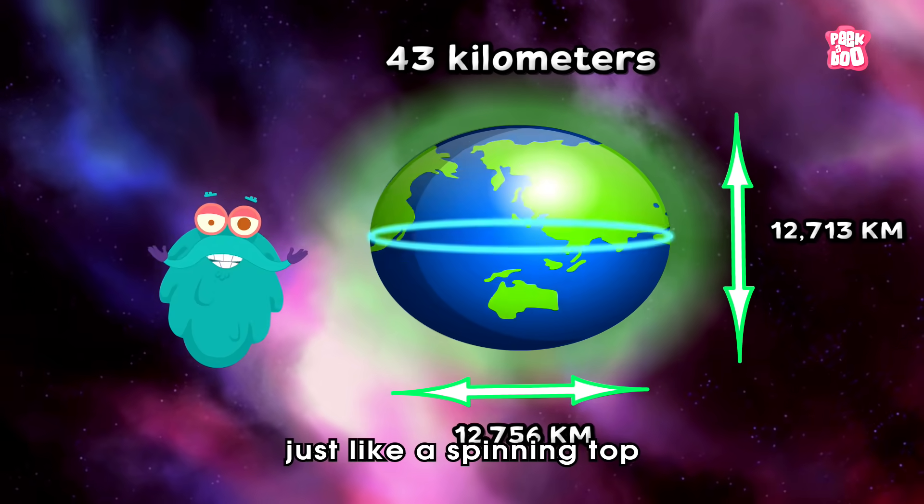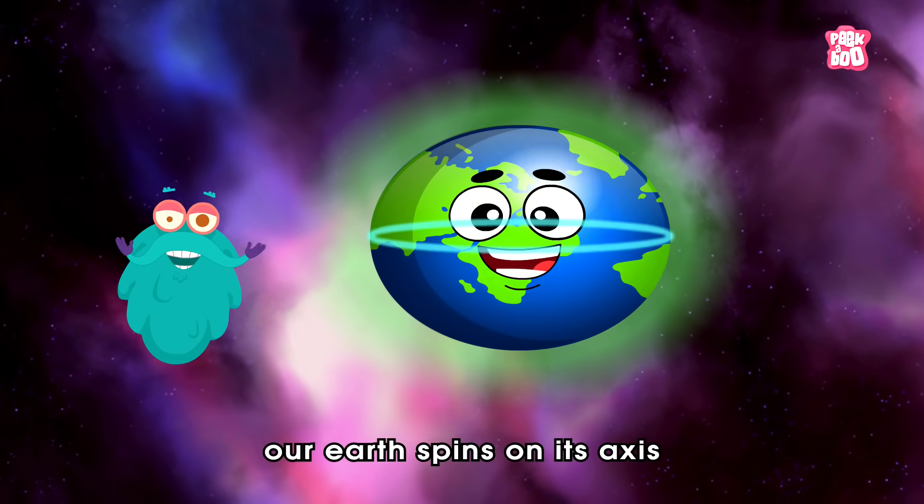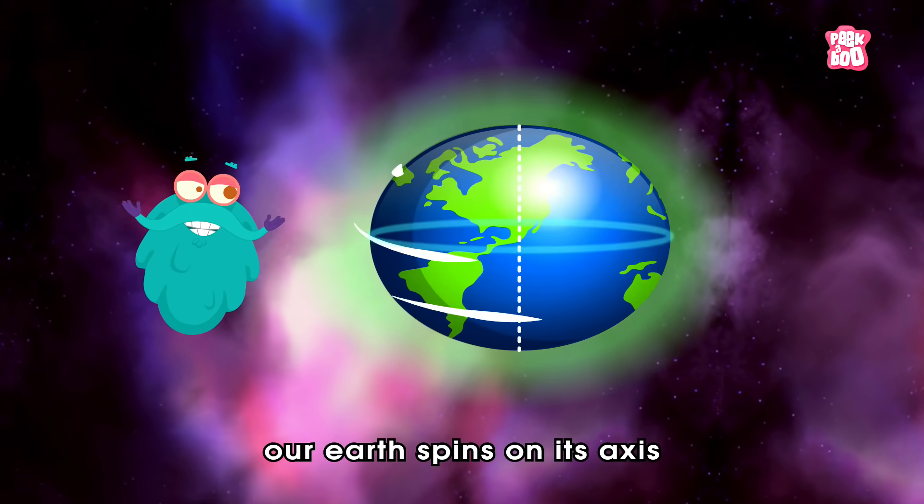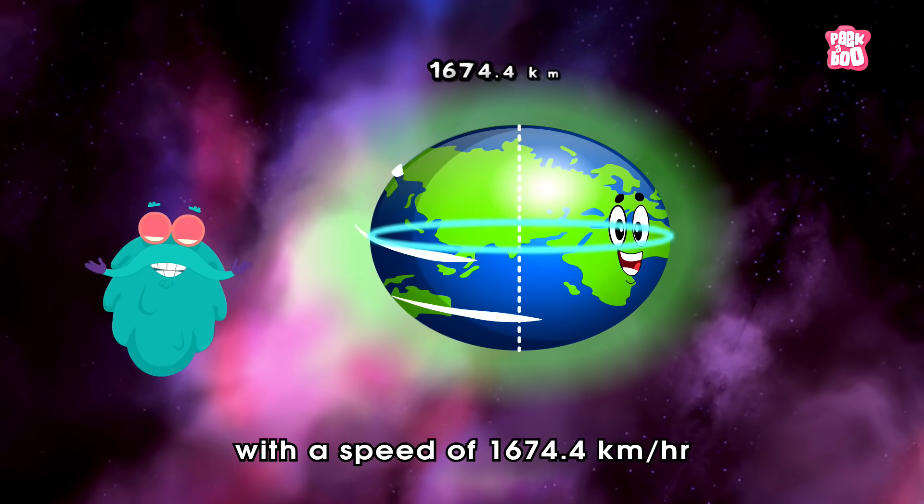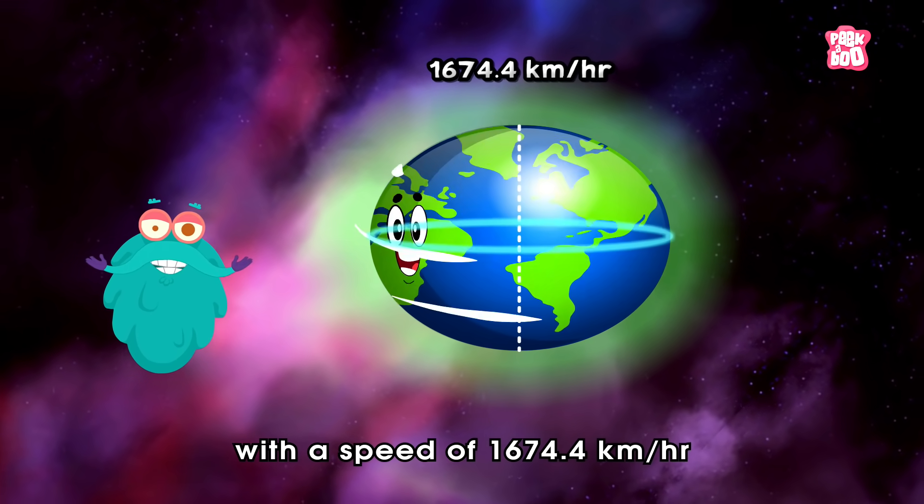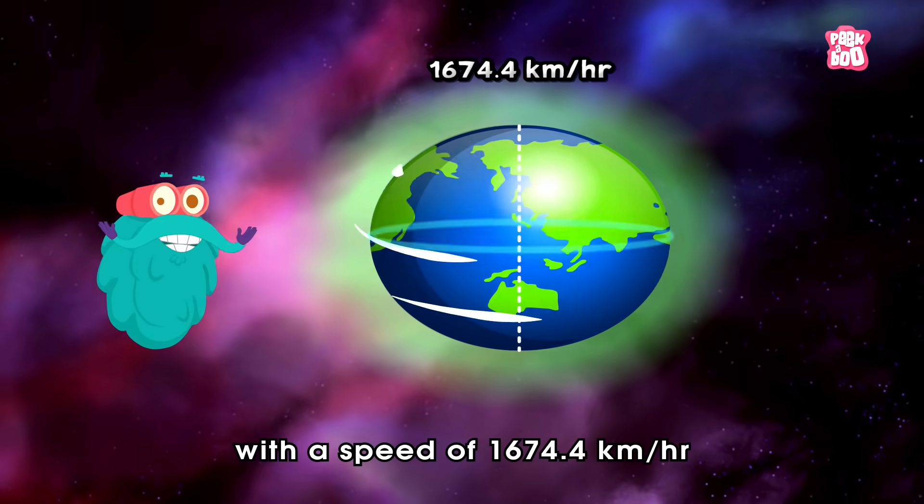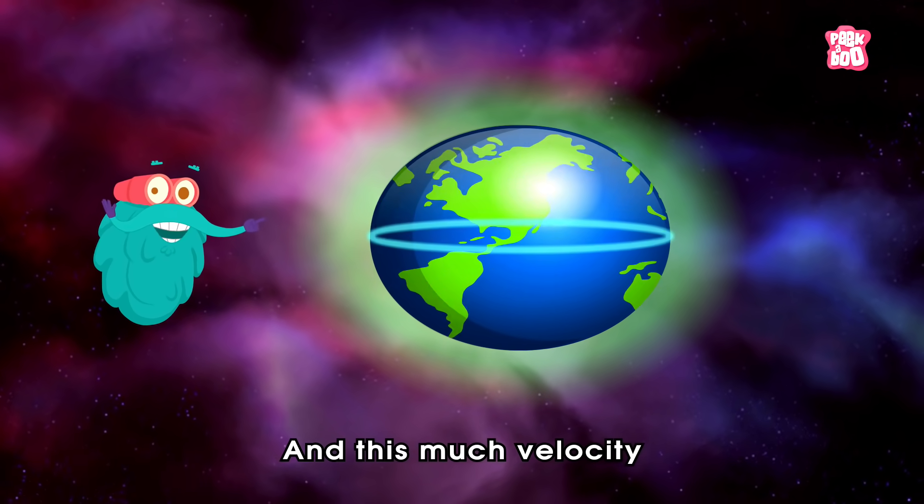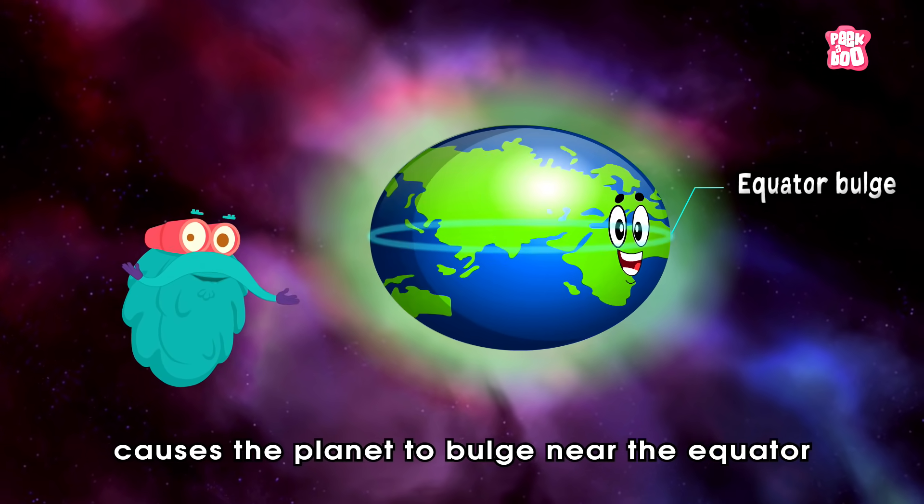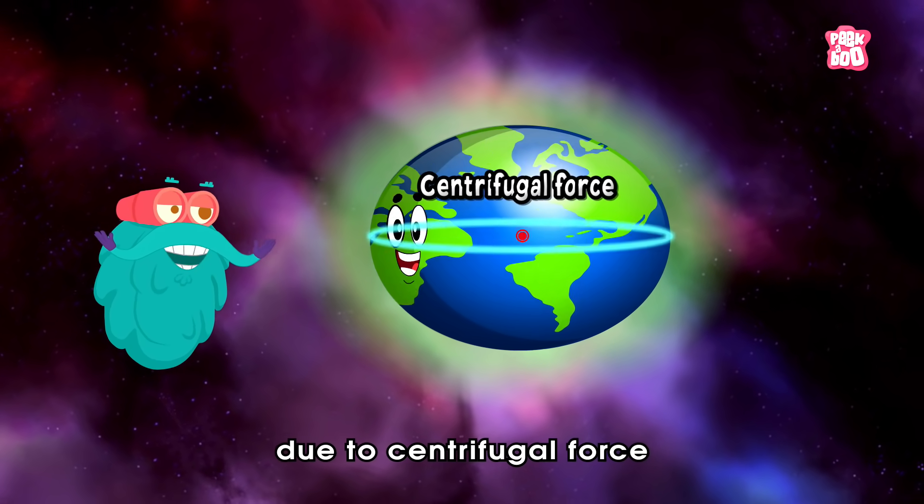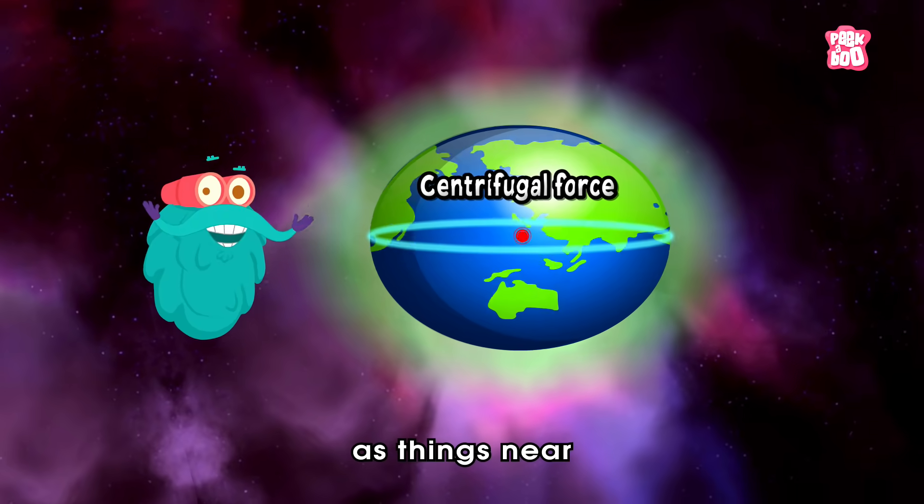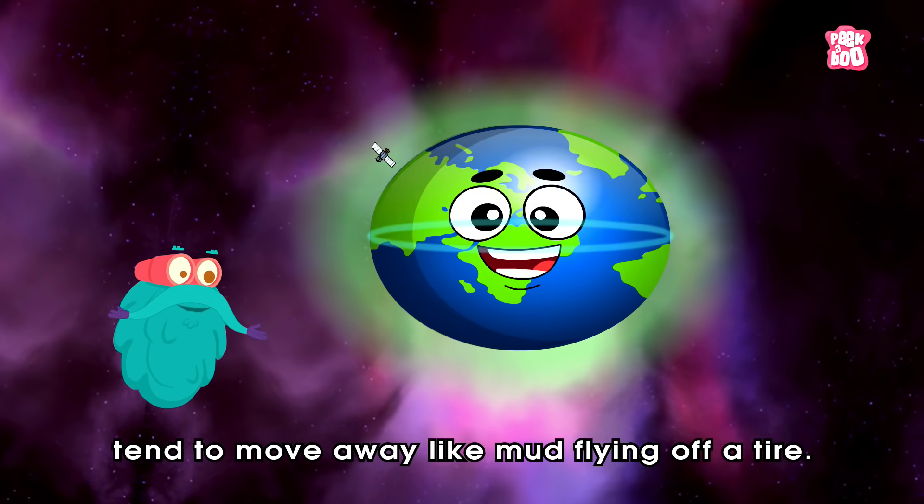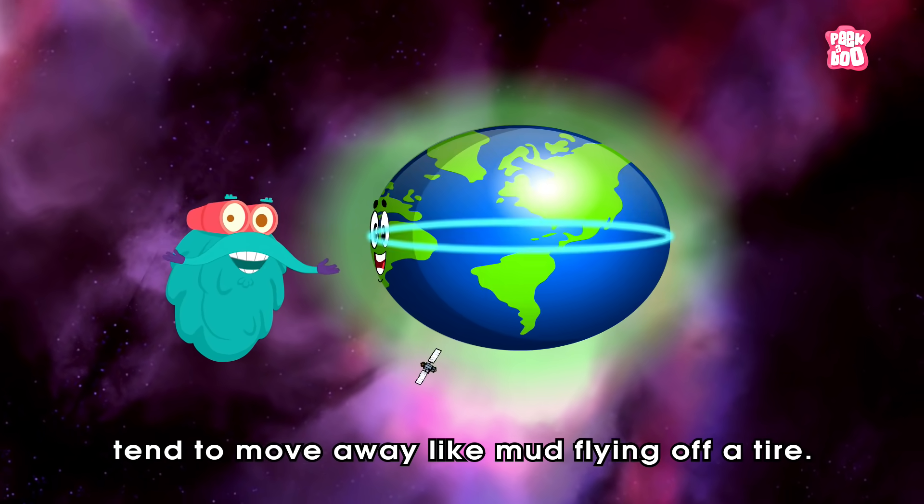This is because, just like a spinning top, our Earth spins on its axis with a speed of 1674.4 kilometres per hour. And this much velocity causes the planet to bulge near the equator due to centrifugal force, as things near it tend to move away like mud flying off a tyre.